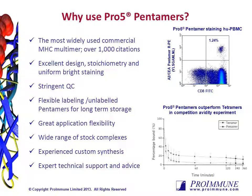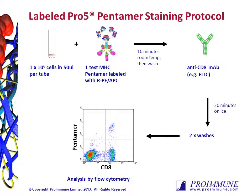Proimmune also offers expert technical support and advice. Pentamer staining is very simple, with just several steps required to stain your cell sample. After incubation of your cells with pentamer and a wash step, antibodies are added for a further 20 minutes, and after a further two washes, your cells are ready to fix and analyse by flow cytometry.